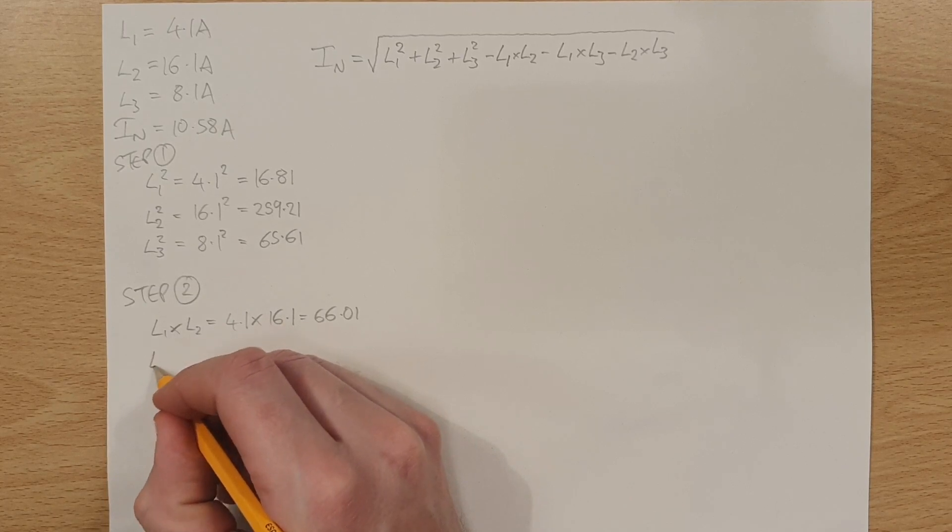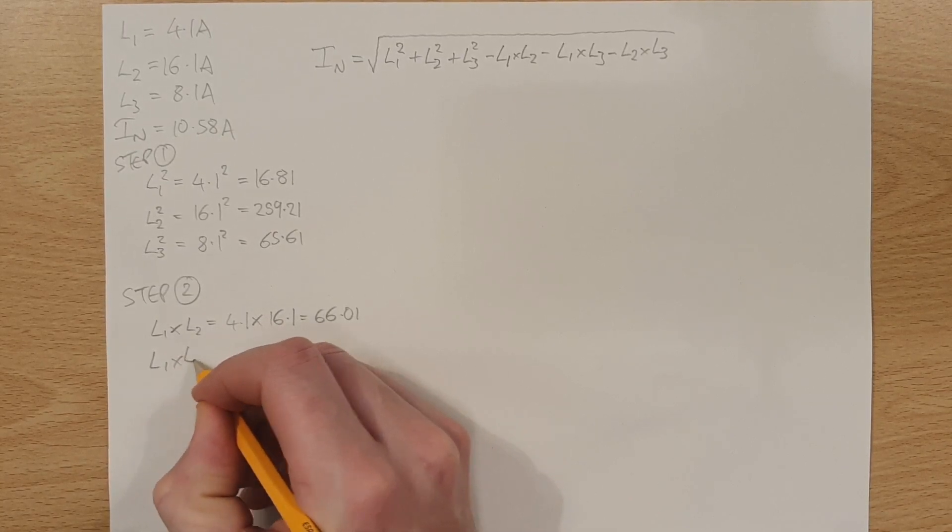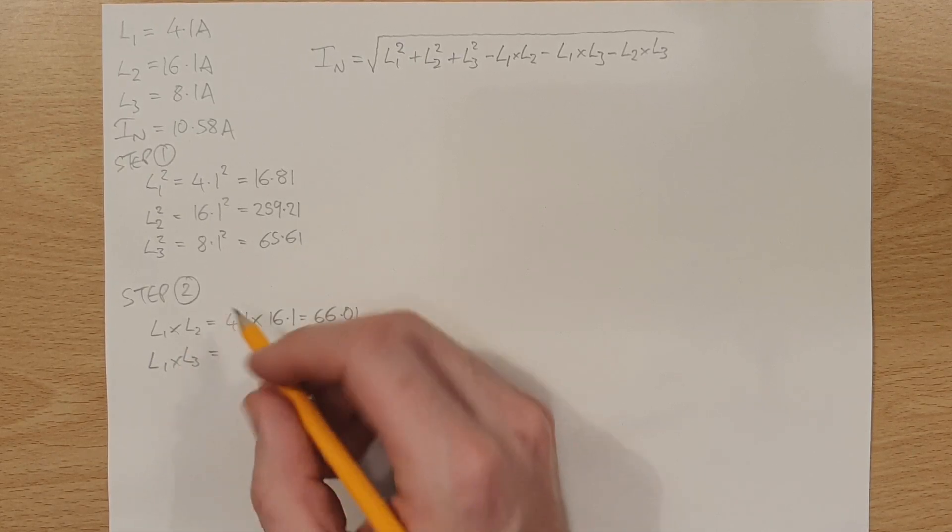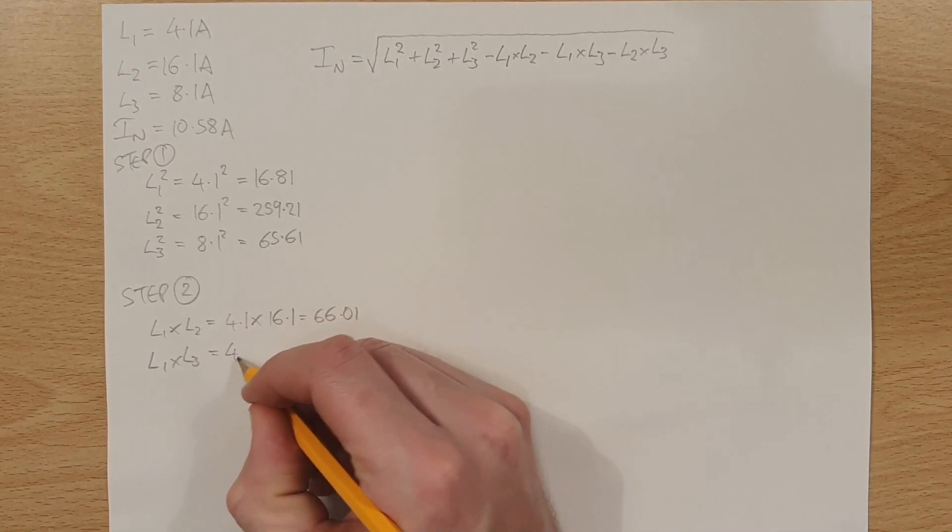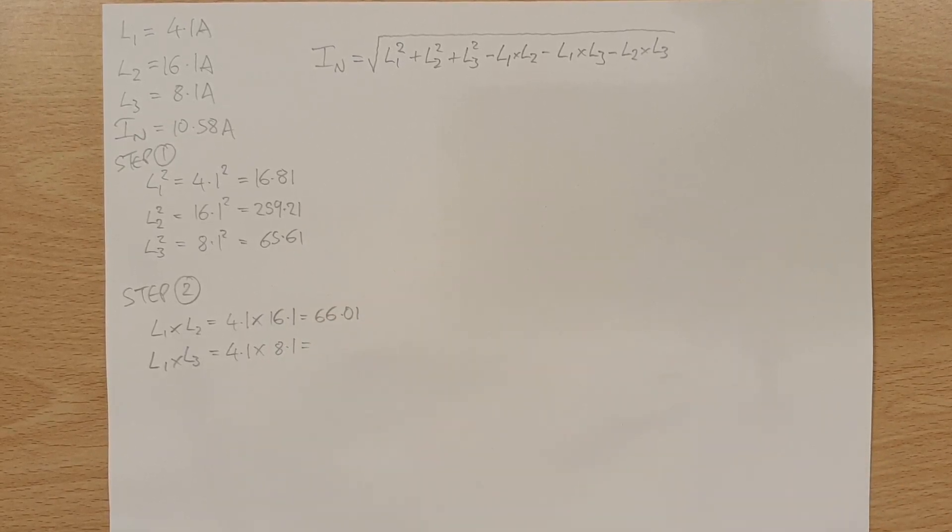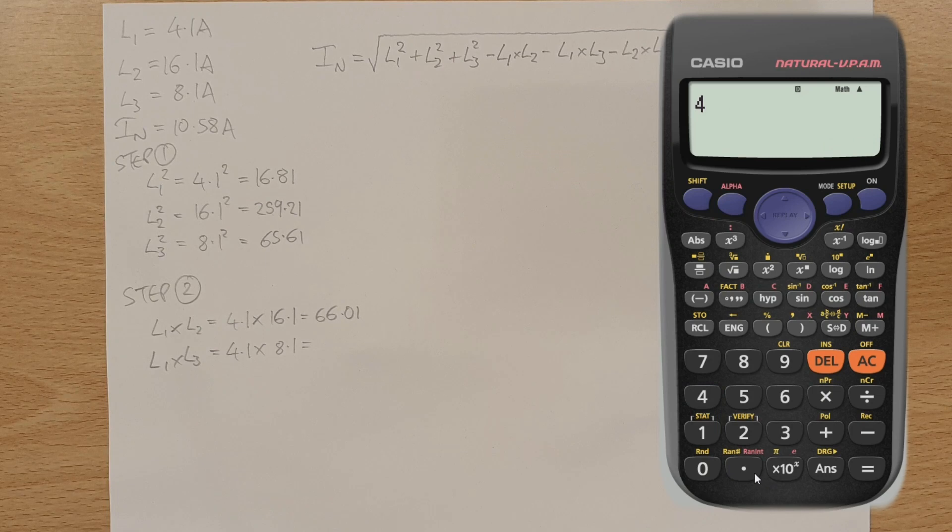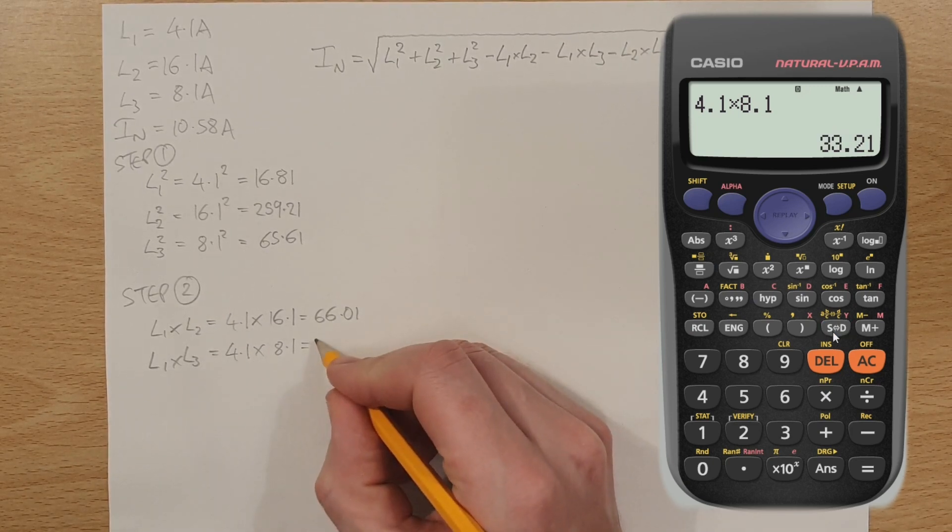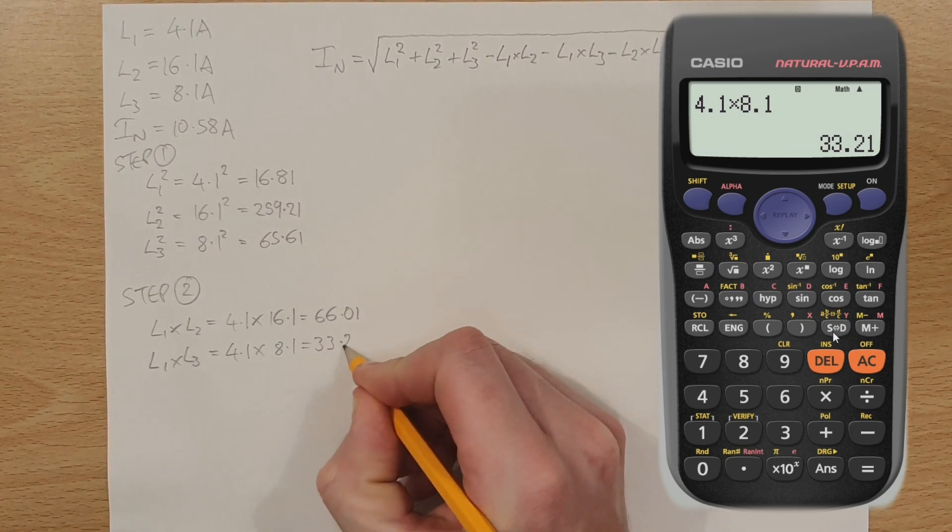And then we've got L1 multiplied by L3. So you can see we've taken L1 and we've multiplied it by the other currents. And that's going to be 4.1 times by 8.1. And we can see from our calculator, 4.1 times by 8.1 is going to give us 33.21. So we'll do that now, 33.21.